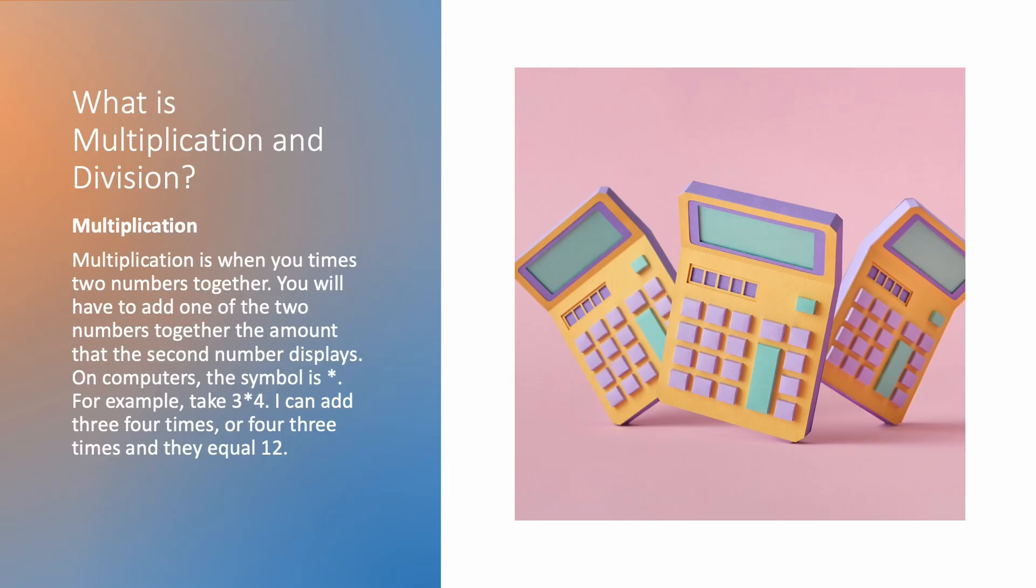So what is multiplication? Multiplication is when you times two numbers together. You have to add one of the two numbers together the amount that the second number displays. On computers, the symbol is an asterisk. For example, take three times four. I can add three four times or four three times, and they both equal twelve.